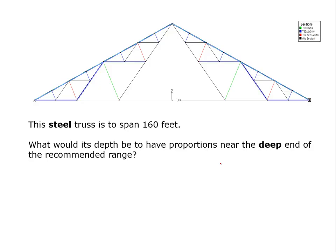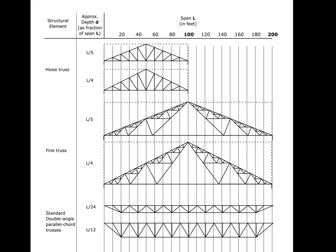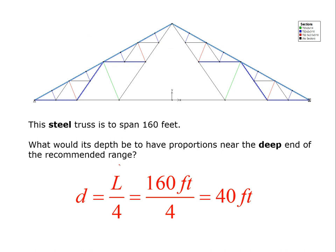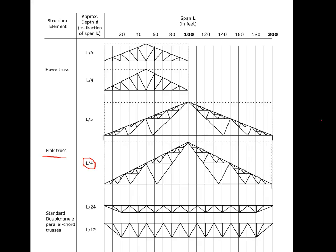Okay. So we talked about fink trusses. We might have a geometry, something like this. And so this question is, suppose we have a steel truss of this nature and want to span 160 feet. What would be the depth to have proportions near the deep end of the recommended range? So we go look here and we see that for the fink truss, these are the deep proportions. And when we run those numbers, we say the depth of this truss is L over four, which is 160 feet over four, which is 40 feet. And it would be nice if you knew the difference when I show you a truss, you understand the difference between a how truss geometry and a fink truss geometry.